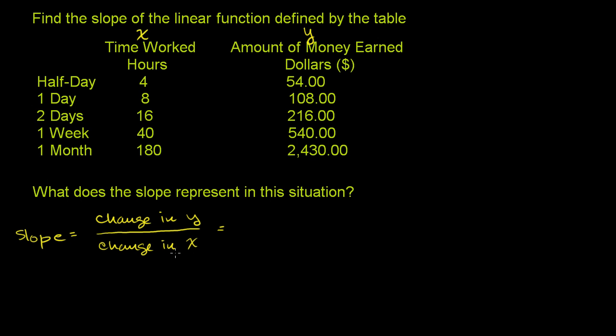So let's just take some data points here, and we could take really any of these data points. I'll take some of the smaller numbers. So when I go from 4 to 8 hours, my change in x is going to be 8 minus 4, or 4 hours. So this is going to be my change in x. I'm just picking these two points. I could have picked 4 and 40 if I wanted, but the math would be more complicated.